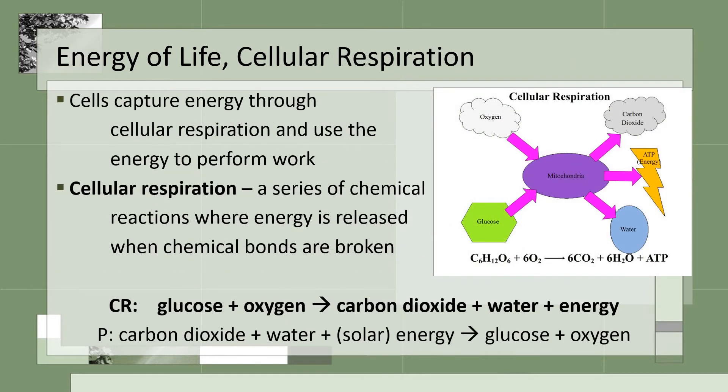Plants can convert solar energy into usable glucose or sugar through photosynthesis. But how does that sugar get into the actual cells of the plant to do work, allowing the plant to perform all of the necessary functions to maintain life? It is through this process called cellular respiration. Animals, including humans, also perform this to get energy to the cells to do work. Notice the formula is backwards from photosynthesis.